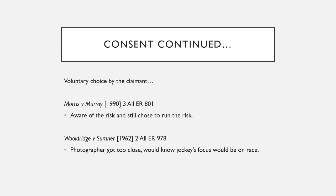On voluntary choice — the claimant must have chosen freely with no duress or pressure. In Morris v Murray, the claimant was drinking with the defendant, was well aware of how drunk he was, and still got on a plane which he was flying. They were aware of the risk and chose to run it of their own free will. Consent has also been used to set a standard of care — in Woolridge, a photographer went too close to a race and was hit by a jockey. The court said the photographer should know the jockey's focus is on winning, not on avoiding photographers, so by moving closer the photographer voluntarily assumed that risk.